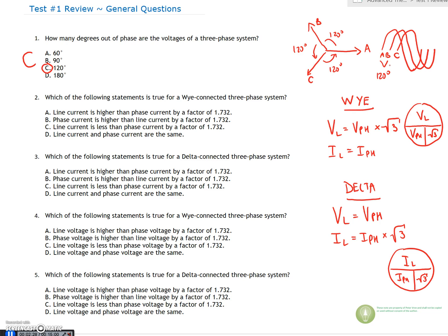Which of the following statements is true for the Y-connected three-phase system? We're either looking for the fact that the currents are the same or that the line voltage is higher. Line current is higher than phase current by a factor of root three — that's not true, so we eliminate A. Phase current is higher than line current — that's never true, eliminate that. We're looking for the statement that line current and phase current are identical for a Y-connected circuit. So two is D.